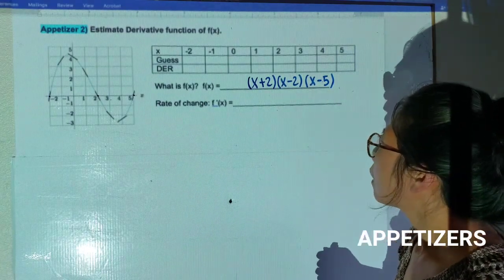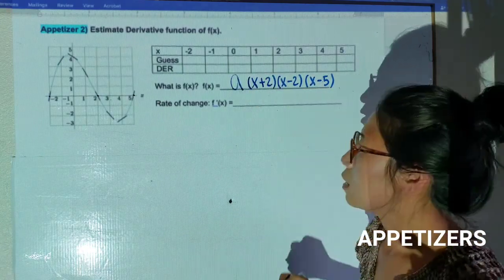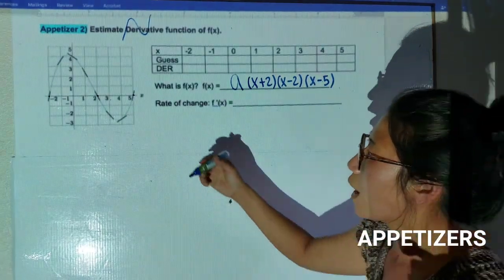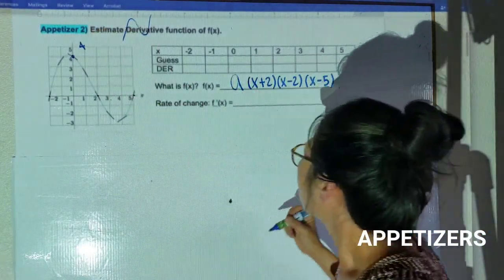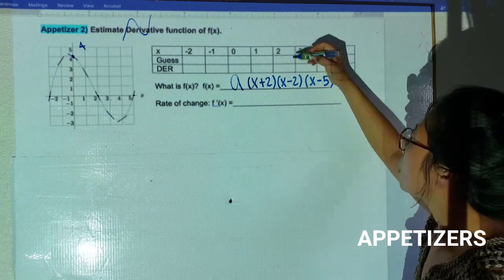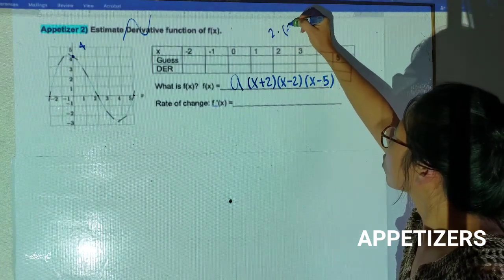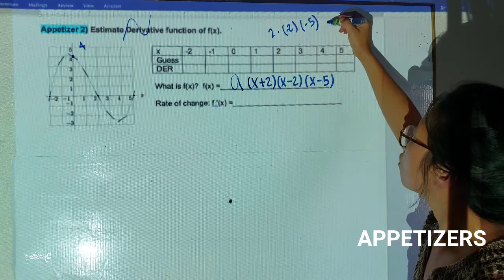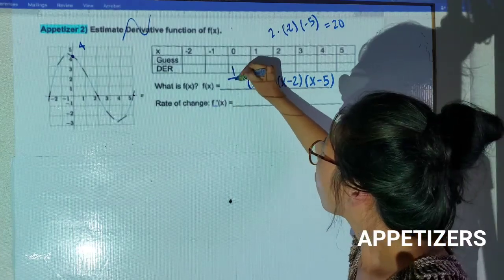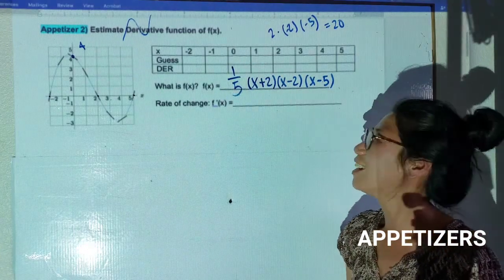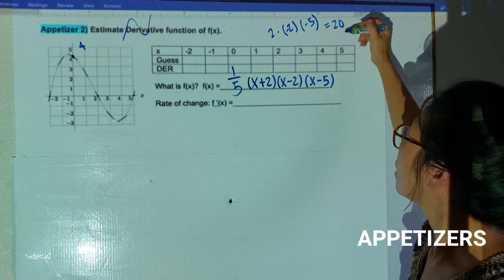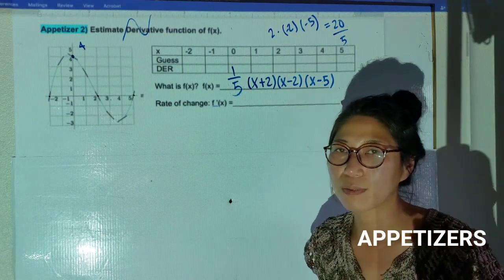I need to find my leading coefficient 'a'. The y-intercept is 4. If I plug in 0, I get 2 × (-2) × (-5) = 20, but I want 4. That means my 'a' value has to be 1/5. So the whole function is divided by 5.